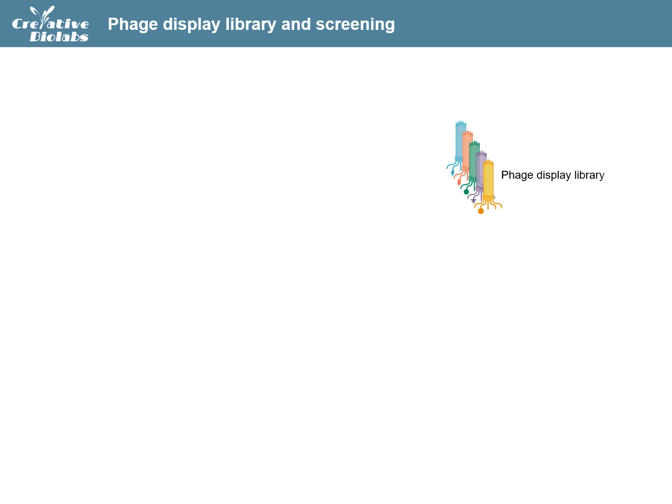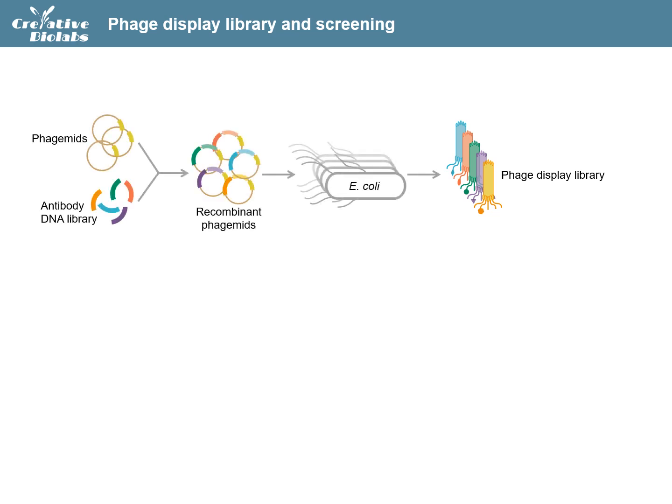In antibody engineering, phage display is further used to screen and select antibodies with unique properties — that is, phage antibody library technology. This process begins with antibody library preparation, followed by ligation of the variable heavy and variable light PCR products into phagemids, culminating in analysis of clones of monoclonal antibodies.